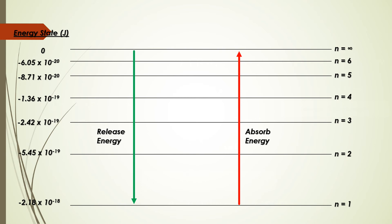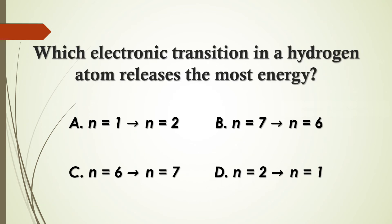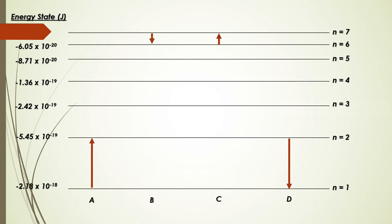Let's move on to an example question: which electronic transition in a hydrogen atom releases the most energy? Here are four different answers. As a visual representation of each answer shows, dropping energy levels releases energy and rising energy levels absorbs energy, so we can eliminate two answers.